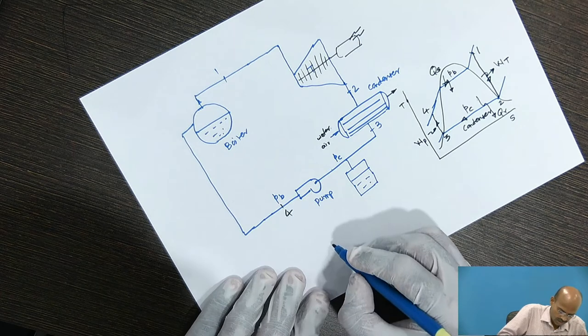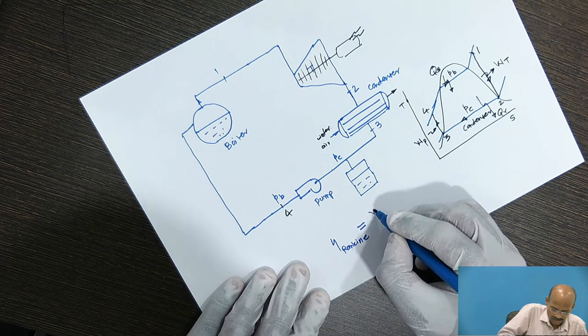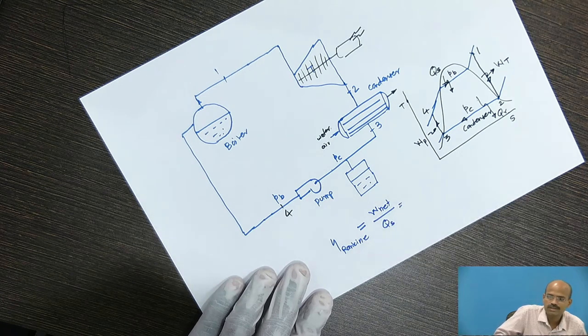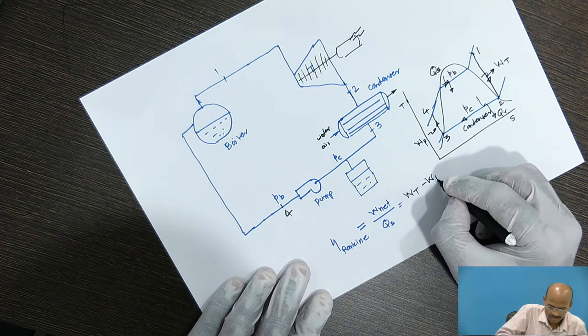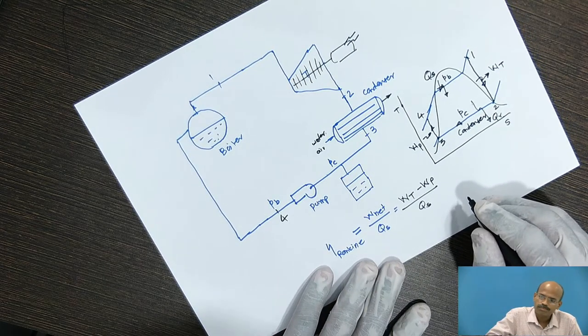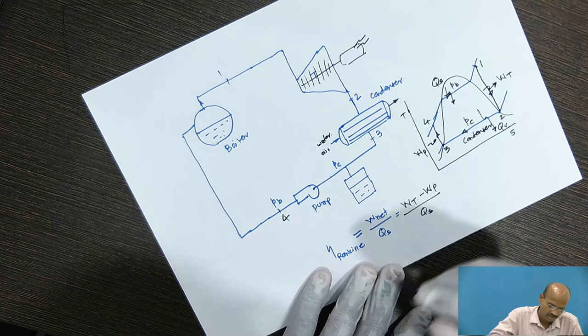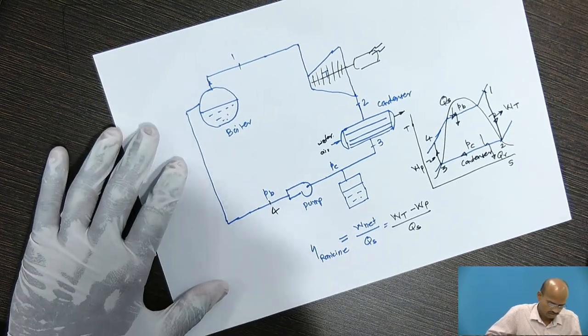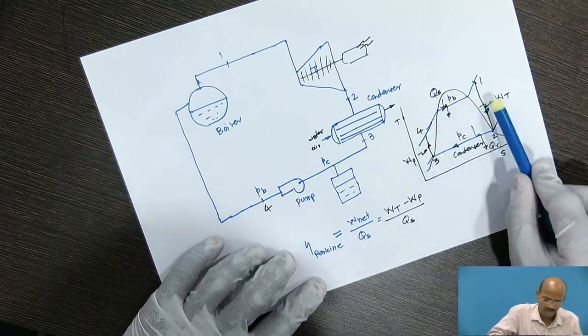Now, the Rankine efficiency, Rankine efficiency is the net work done divided by heat supplied. So, what is net work done? Net work done is work developed by turbine minus work consumed by pump divided by Qs. As the pump work consumption is very, very small, sometimes you can neglect it also. So, this was the Rankine cycle which is represented on the T-s plot.